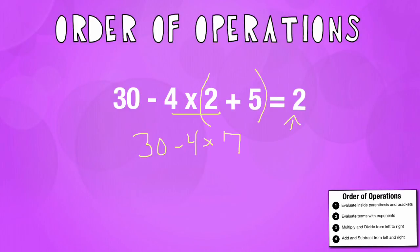Now because I have a subtraction here and a multiplication here, I must multiply first. So 30 minus 28 and that'll give me the answer of 2, which is what I needed to find to begin with.